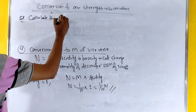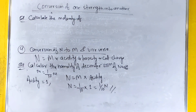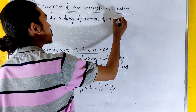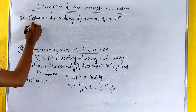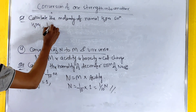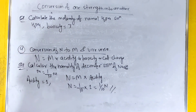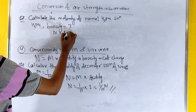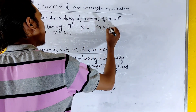Calculate the molarity of a normal H3PO4 solution. For H3PO4, the basicity — the number of replaceable hydrogen ions — is 3. For a 1N solution, the formula is: normality equals molarity into basicity.